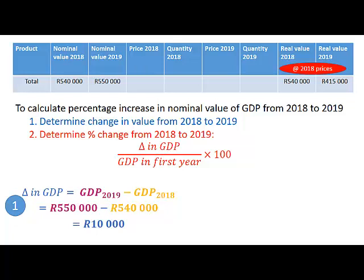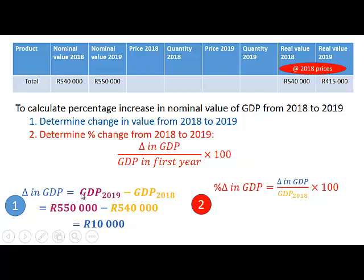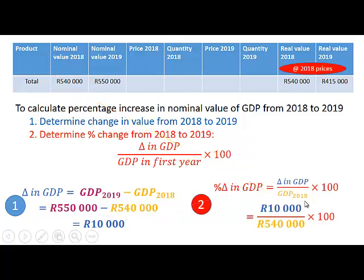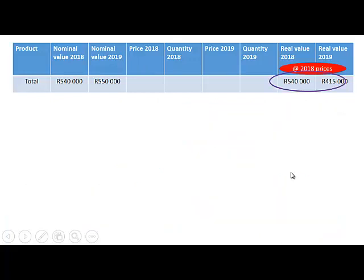Step two is to determine the percentage change. The percentage change in GDP is equal to the change in GDP (which we calculated as 10,000) divided by the GDP for 2018 (540,000), times 100. That gives us 1.852%, meaning the increase in nominal GDP from 2018 to 2019 was 1.852%.